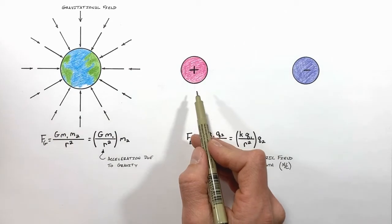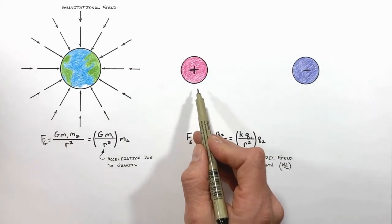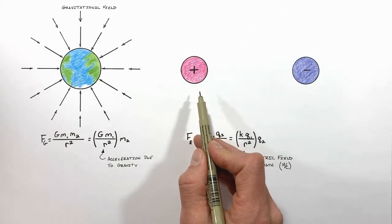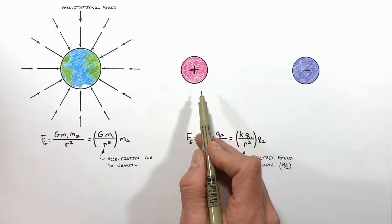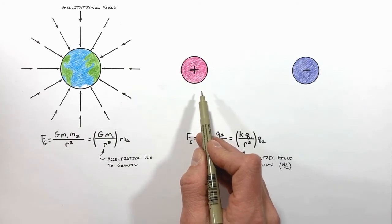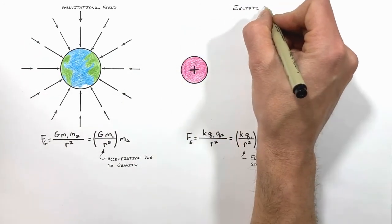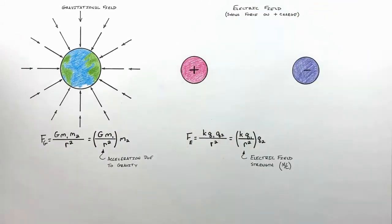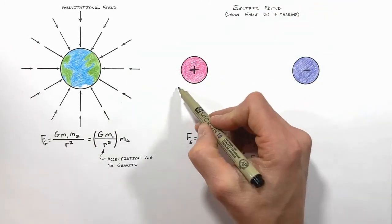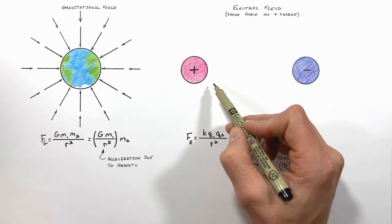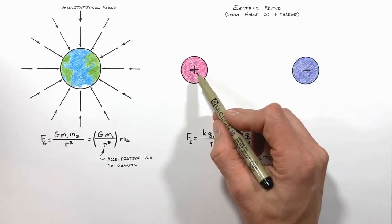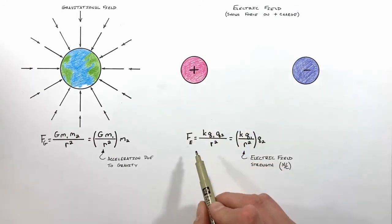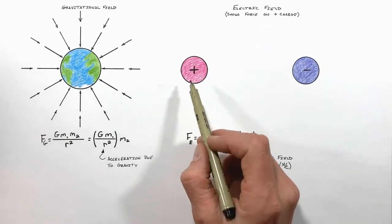There's a convention which we adopt, and that convention is a little bit arbitrary. But the convention is we always show the electric field as showing the direction in which a positive charge will be pushed or pulled. So if we were to place a positive charge anywhere close to this larger positive charge, it would in turn be pushed away from this large central charge because according to Coulomb's law, like charges repel.